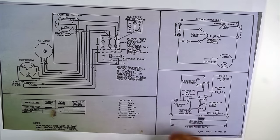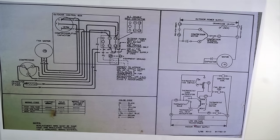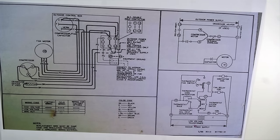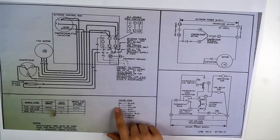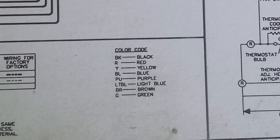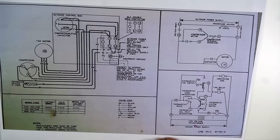When I start looking at a wiring diagram, I like to look at the whole picture first — the little tables, any notes, any legends. The color code is right here. Everything is abbreviated on the wiring diagram: BK stands for black, R for red, Y for yellow, and so on.